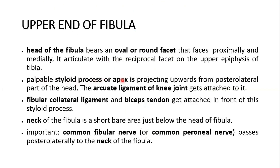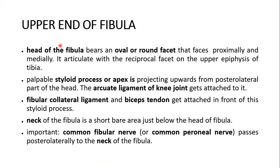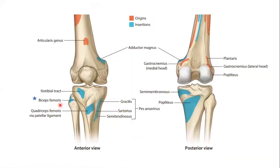The palpable styloid process, also called the apex, projects upwards from the posterolateral part of the head. The arcuate ligament of the knee joint gets attached to it. The styloid process is palpable by hand — it is subcutaneous. The fibular collateral ligament and biceps tendon get attached in front of the styloid process. You can see this is the biceps tendon getting attached to the styloid process.